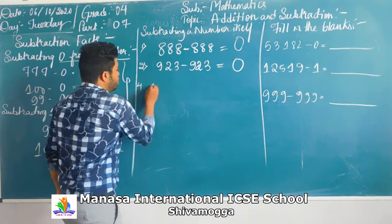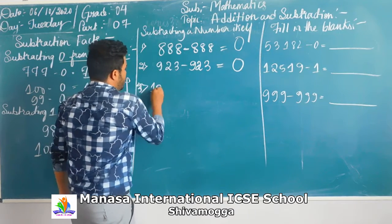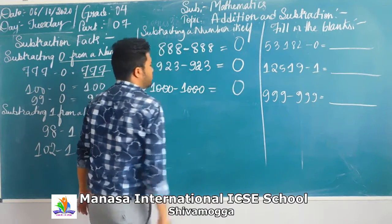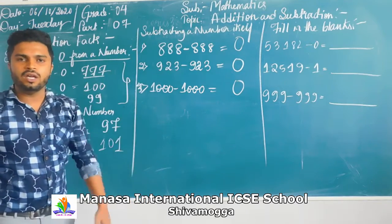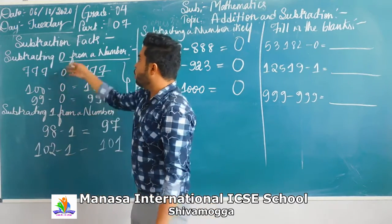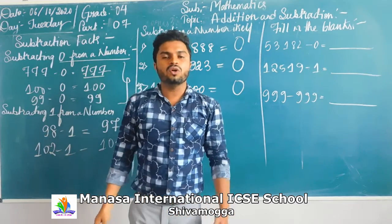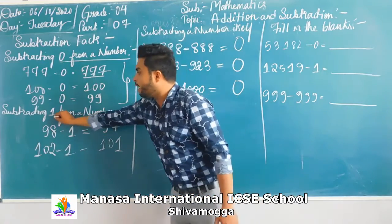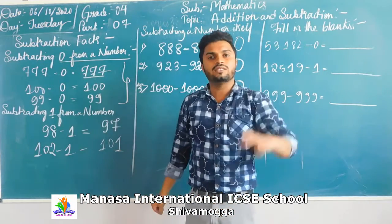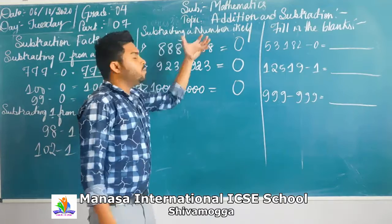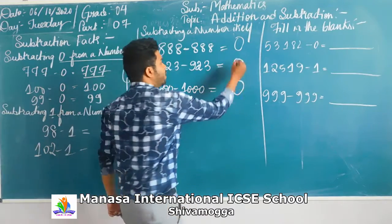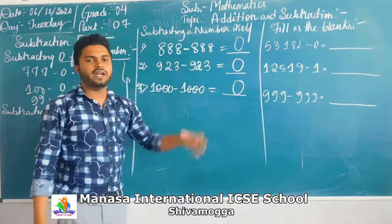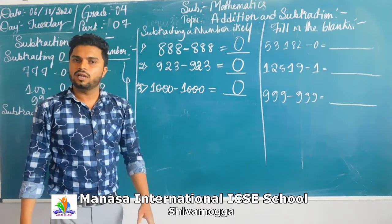So let's summarize all three properties. Once you subtract zero from a number, you will get the same number. Once you subtract one from a number, you will get one less number. Once you subtract a number from itself, you will get zero.